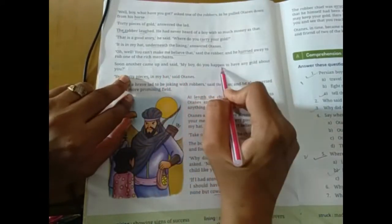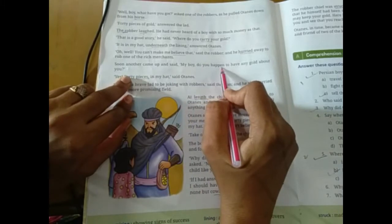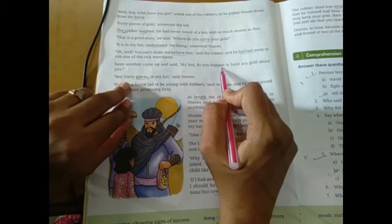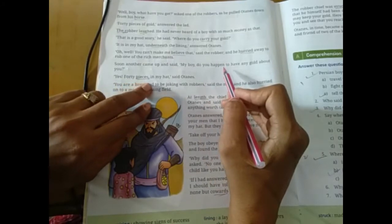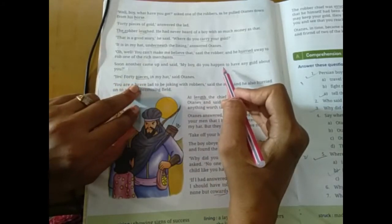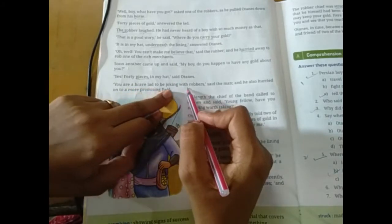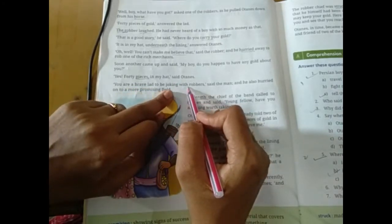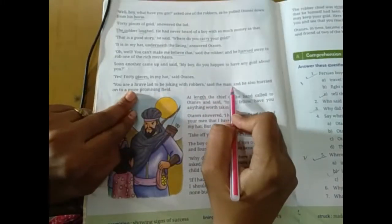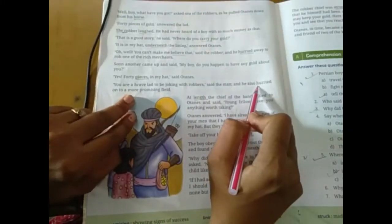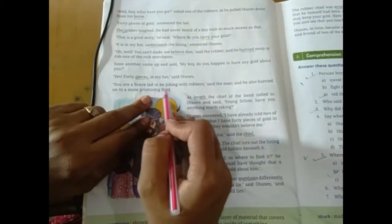So, andar ke aap. Dusra aata hai abole hai my boy. Do you happen to have any gold about you? I say, bachhe ke liye kuch the. Yes, 40 pieces in my head said Hortense. You are a brave lady to be jogging with robbers. So, tum bahut mushkiya ho, jo robbers ke saath joking karke ho, bachan karke ho.